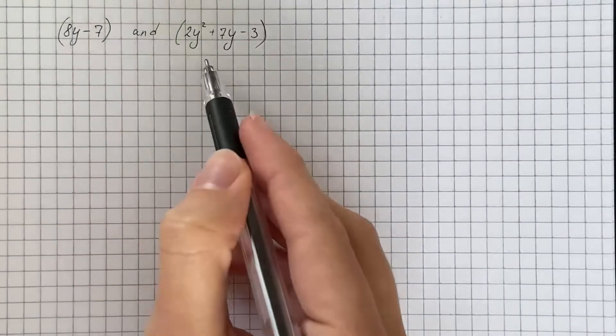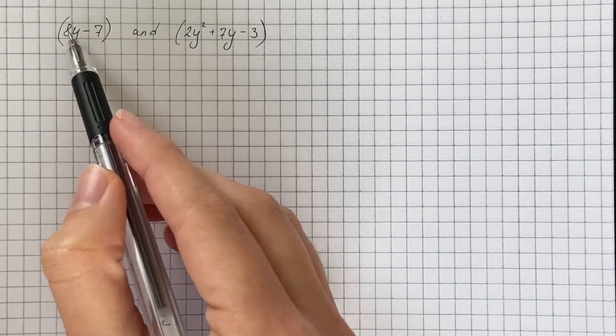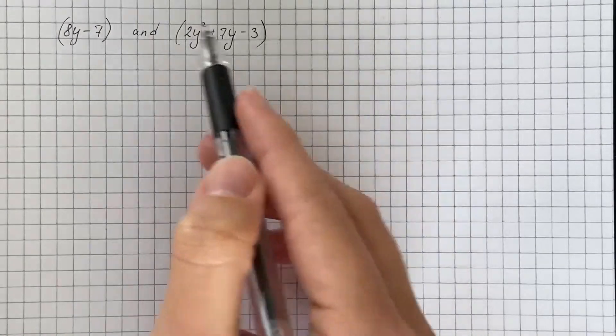We have to find the product of two given polynomials, so we're going to distribute each term of the first polynomial and multiply it by each term of the second polynomial.